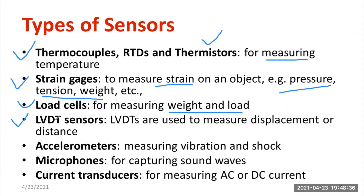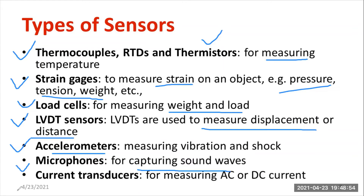The linear variable differential transformer (LVDT) is mainly used for measurement of displacement or distance. In automobiles, accelerometers are highly unavoidable. The microphone is one of the best examples of sensors — it captures sound waves at different frequencies. Current transducers can measure either AC or DC current. These are the different types of sensors.